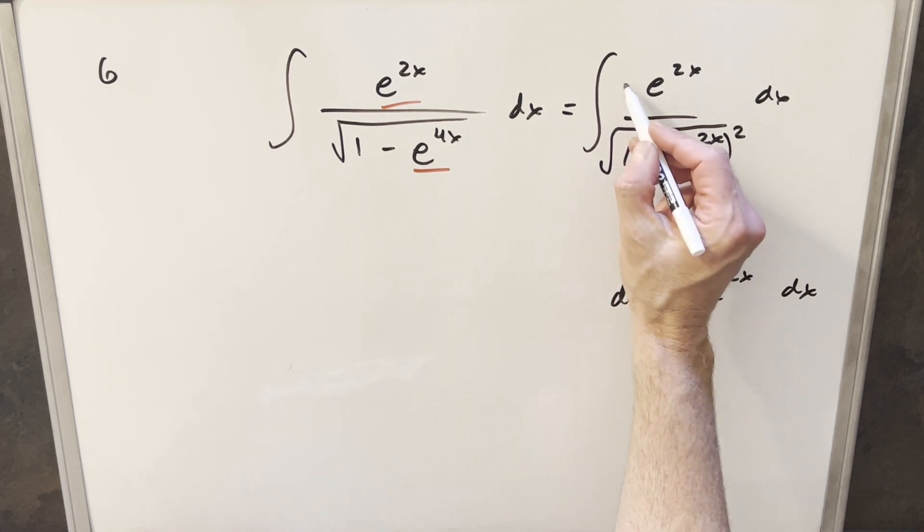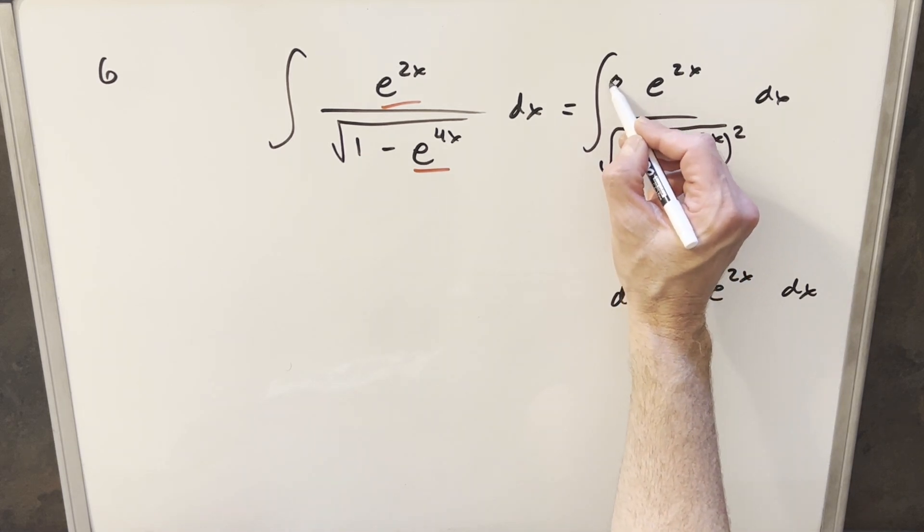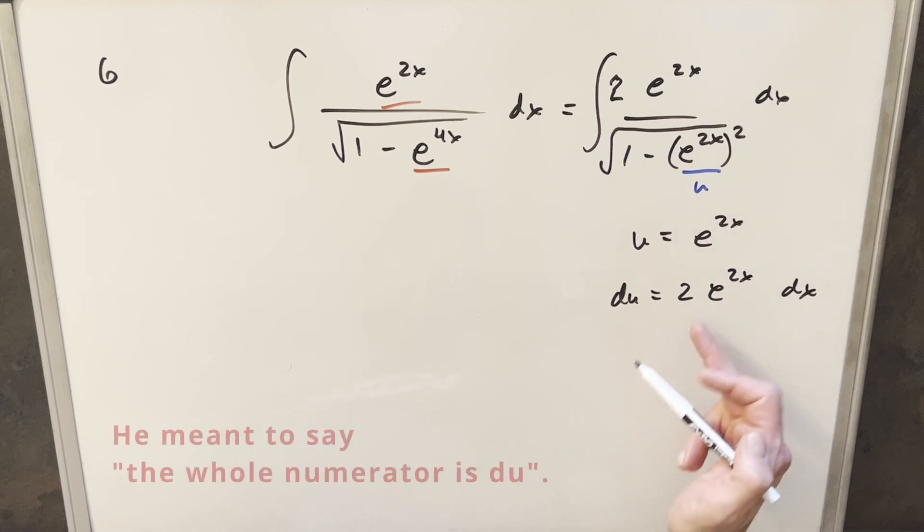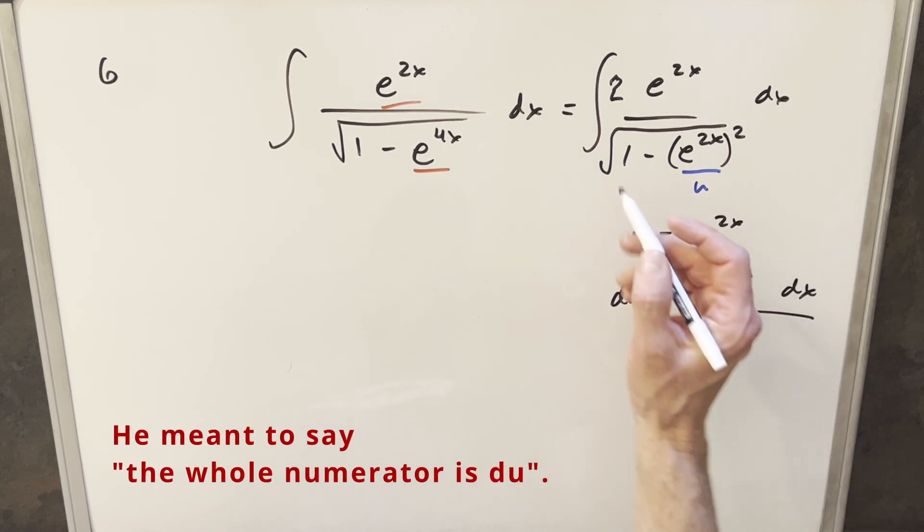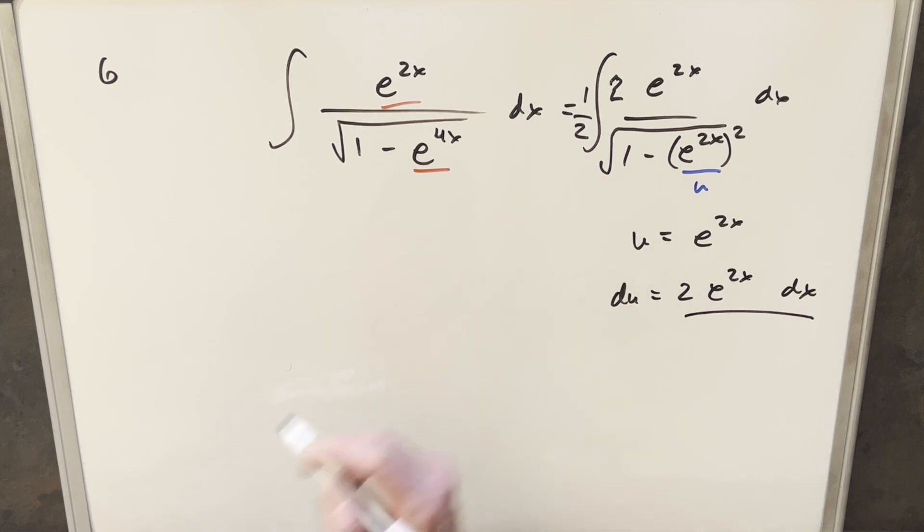And then just to make this work, the way I can do is, if I multiply by a 2 out front here, then our whole denominator becomes the du. So we're in really good shape, but I don't want to change it. So I'm going to multiply by 1 half in front.